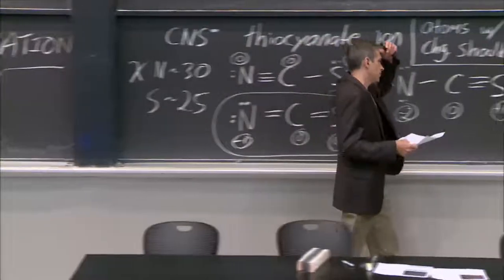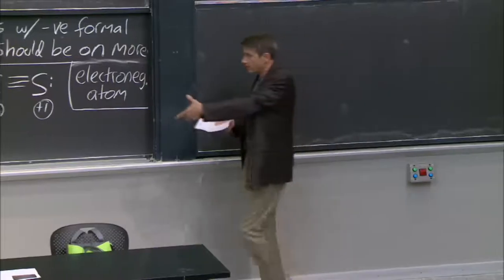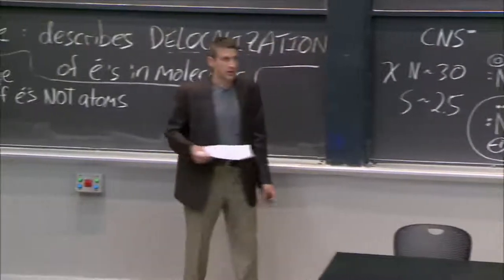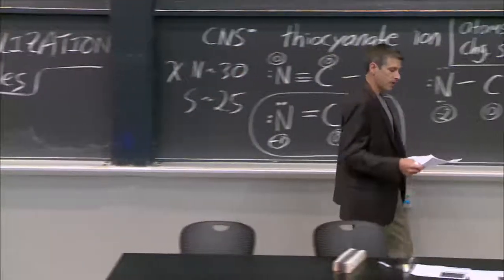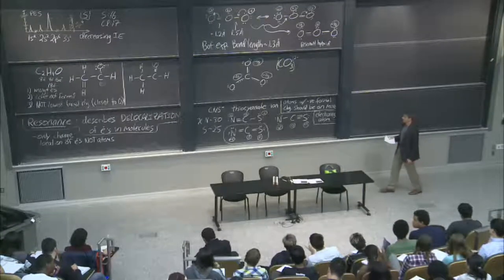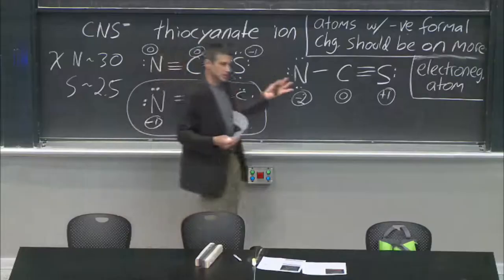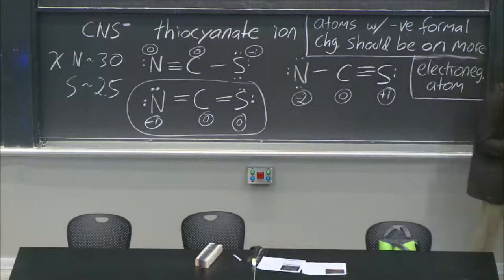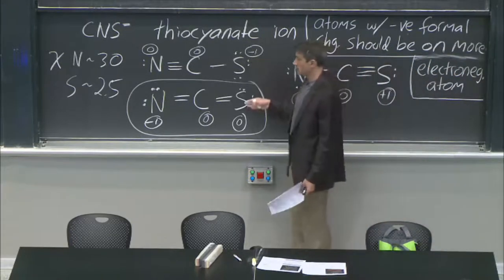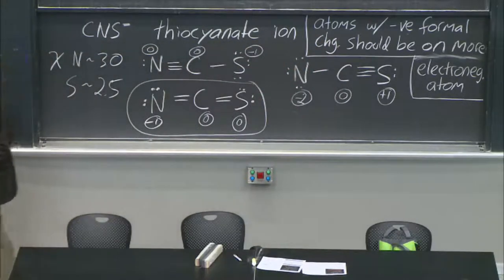The atoms that are more electropositive would want to have positive formal charges in general — the same rule applies the other way. So that's the last part of Lewis structures I want you to know about. You can see resonance — could you move electrons around and get different structures? Yes. But those aren't actually equivalent, because they have very different formal charges, and two of them had similar-ish formal charges but one is more stable because of that.